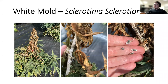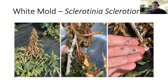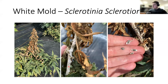White mold infects the inflorescence and the entire above-ground portion of hemp. It has a very broad host range, so crop rotation probably won't help. It is caused by the fungus Sclerotinia sclerotiorum. White mold infects the stem, clogging the plant's vascular system and preventing water flow from reaching the upper shoots, causing the plant to die from the top down. You'll also see characteristic white mycelial growth over the stem, and inside the stem, hard black sclerotia that allow the pathogen to overwinter in the soil.